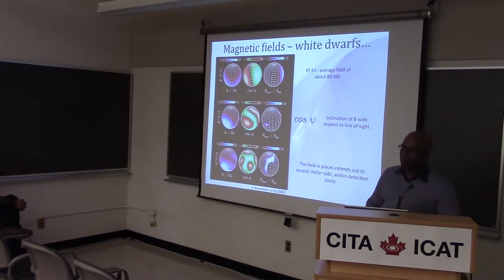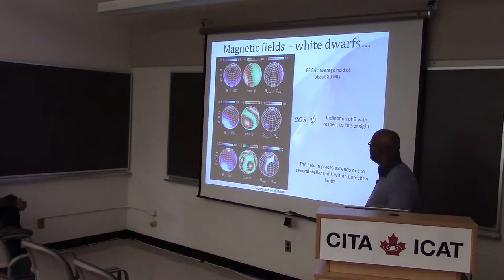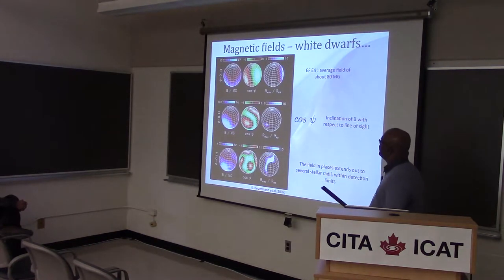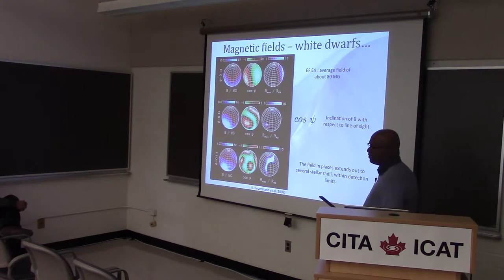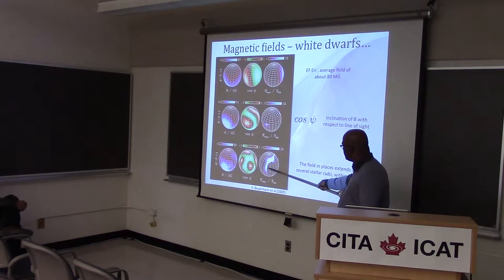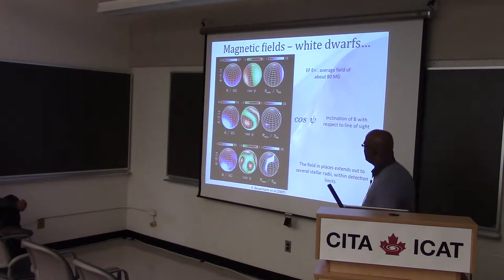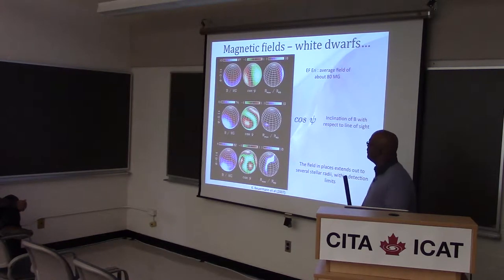Magnetized white dwarfs exist, and many times their field strengths are quite high. This is a Zeeman tomography done by Berman et al. They looked at EF Eridani and found the average field is about 80 megagauss, which is fairly strong even for a magnetized white dwarf. They also found that in some places the field extends quite far out, almost about 10 stellar radii from the surface — quite a dynamic and important part of the physics of the star.